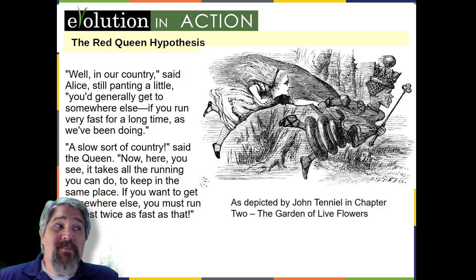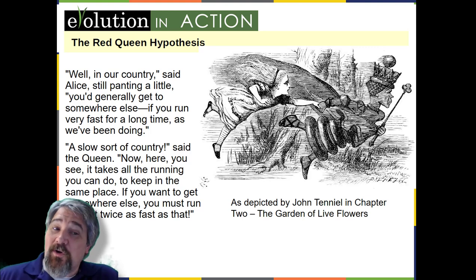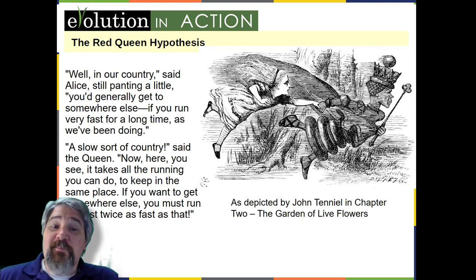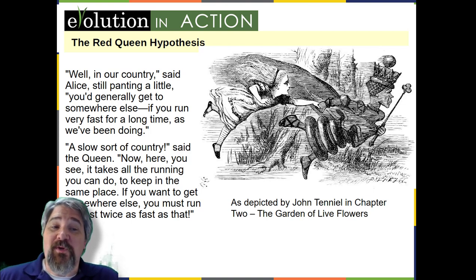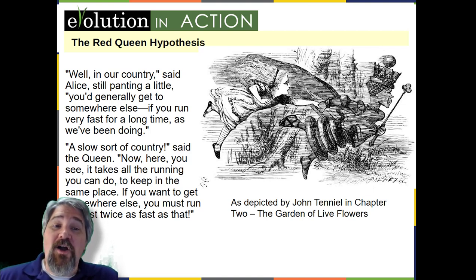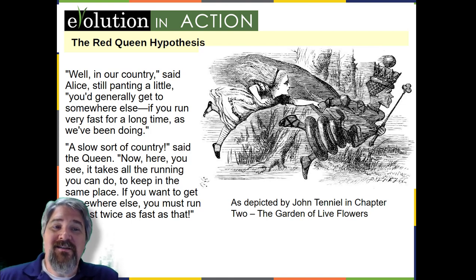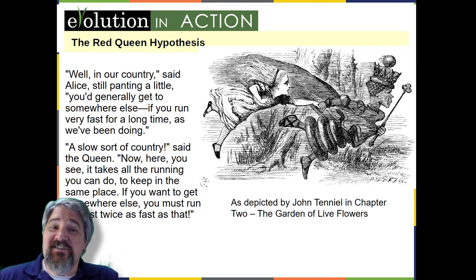Evolution in action: the Red Queen hypothesis. There is no question that sexual reproduction provides evolutionary advantages to organisms that employ this mechanism to produce offspring. The problematic question is why, even in the face of fairly stable conditions, sexual reproduction persists when it is more difficult and produces fewer offspring for individual organisms. Variation is the outcome of sexual reproduction, but why are ongoing variations necessary? Enter the Red Queen hypothesis, first proposed by Leigh Van Valen in 1973. The concept was named in reference to the Red Queen's race in Lewis Carroll's book Through the Looking Glass, in which the Red Queen says one must run at full speed just to stay where one is.